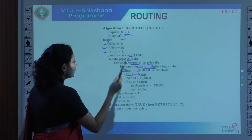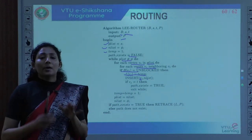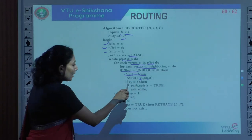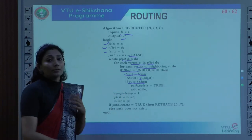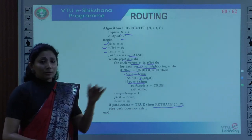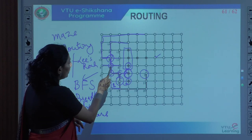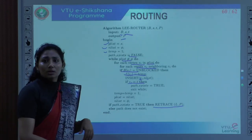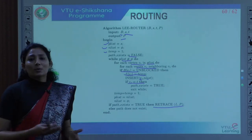We then check whether that neighbor is the target. If the immediate next neighbor is the target, path exists is set to true and we retrace how we reached the neighbor. If not, one level of search is complete and temp is incremented by 1 — since distance from one point to the next is one unit. We then repeat the entire process. This is one of many algorithms to identify the best way to connect two points, and this happens only in the global routing phase.